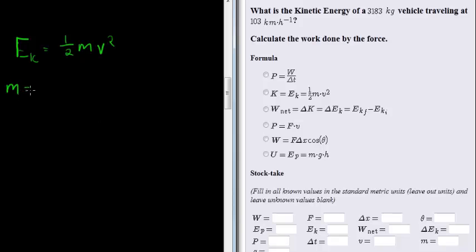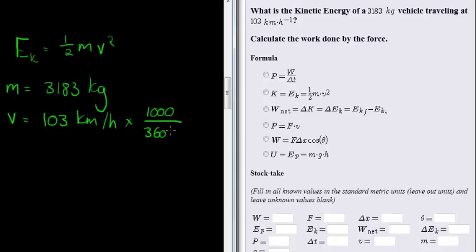Our mass is 3,183 kilograms and our velocity is given in kilometers per hour. Now we know that when we work with kilometers per hour we need to change it to meters per second, which means we multiply by a thousand to convert kilometers to meters. To get hours to seconds we must multiply with 3,600, but it's in the denominator so we multiply the denominator.